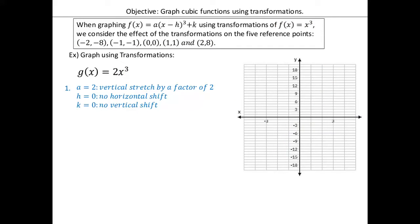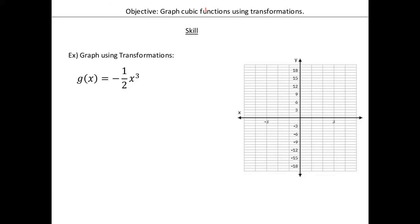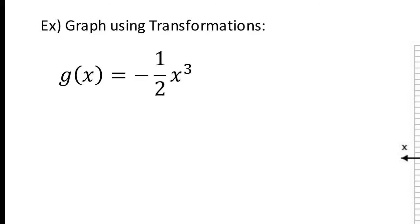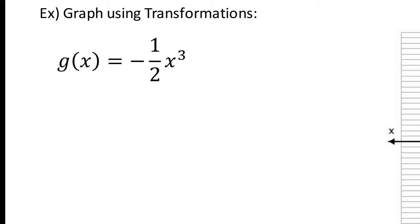Let's look at the next example. On Monday we only had time to do h and k for the first example, so let's copy this next one. We have g(x) = -½x³. We need to practice finding a, h, and k like we did on Monday. Lefties, tell your partner: what is our 'a' value and what does it mean?